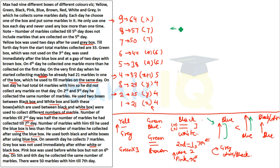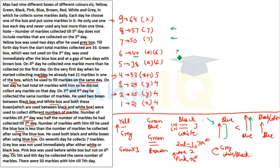Now checking possibilities for blue box placement. Blue cannot be on day 8 because by that point 50 marbles are already collected before blue, and after blue only 7 remain — the condition says marbles before blue must be less than marbles after blue, so blue cannot be on day 8. Similarly, blue cannot be on day 7, day 6, or day 9.